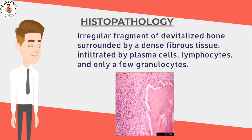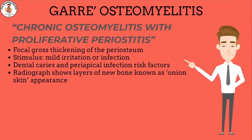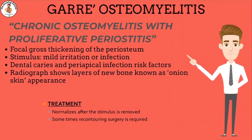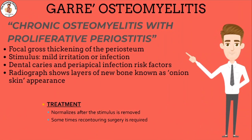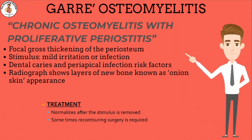The third type is Garre's osteomyelitis, also known as chronic osteomyelitis with proliferative periostitis. This results in focal gross thickening of the periosteum with peripheral reactive bone formation. It is stimulated by a mild irritation or infection. The mandible of children and young adults is affected. Dental caries and periapical infection are its risk factors. The patient suffers with pain in the tooth and jaw, and there is bony hard swelling on the outer surface of the jaw.